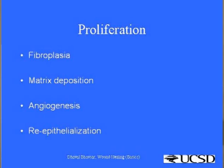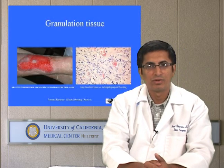The proliferation phase starts approximately 48 hours after surgical wound creation. It has four distinct events that go on, usually simultaneously except for the last event, which is re-epithelialization. The events that characterize proliferation are fibroplasia, matrix deposition, angiogenesis, and re-epithelialization. The eventual result of the proliferation phase is creation of granulation tissue.